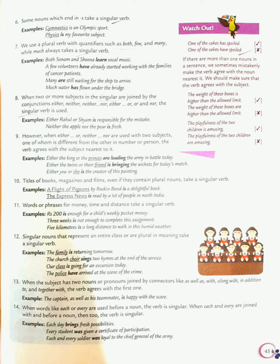The next one is, words or phrases for money, time, and distance take a singular verb. For example, rupees 200 is enough for a child's weekly pocket money. Three weeks is not enough to complete this assignment. So here, these phrases for money, time, and distance take a singular verb.